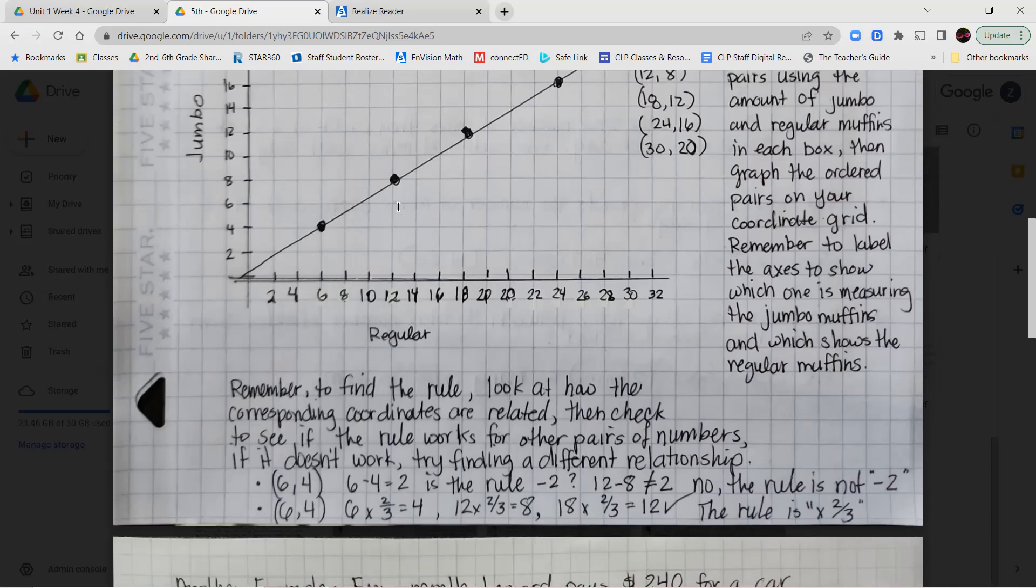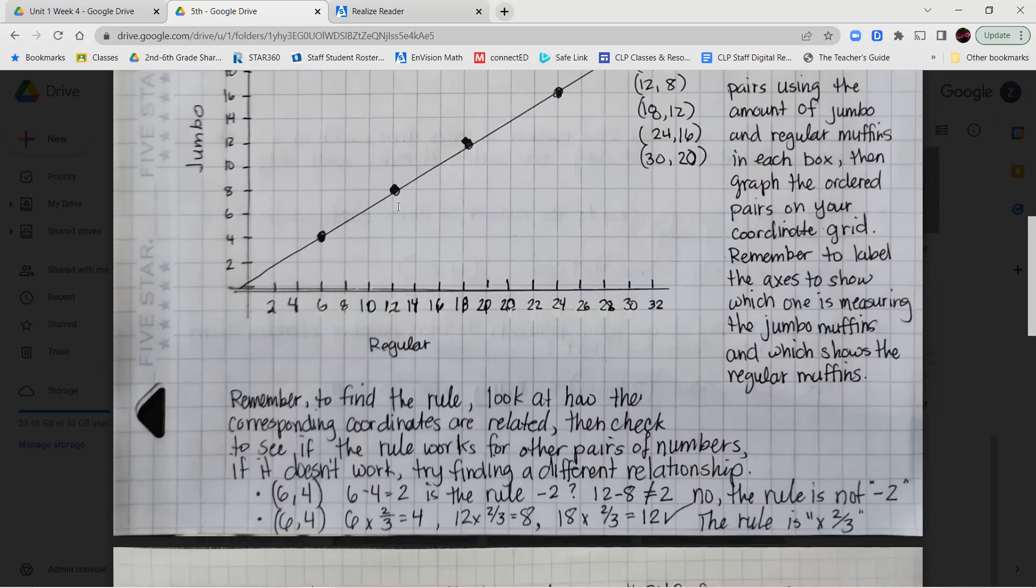Now remember to find the rule and look at how the corresponding coordinates are related and then check to see if the rule works for the ordered pairs of all of the other numbers. So just because you found a rule that fits one group of numbers or one ordered pair, that doesn't necessarily mean it's going to apply to the rest.